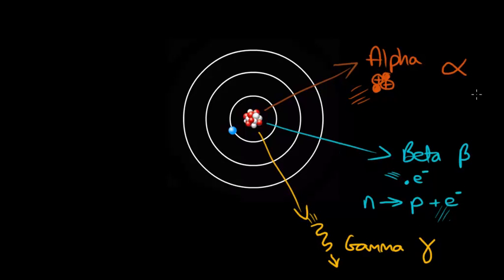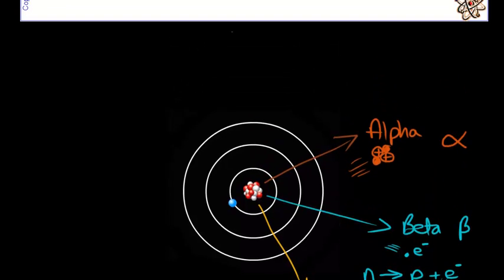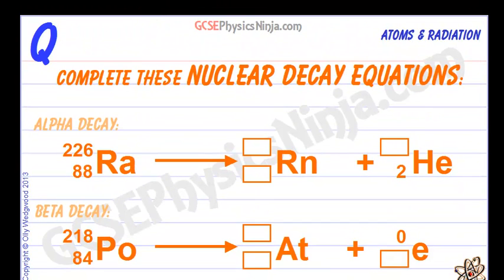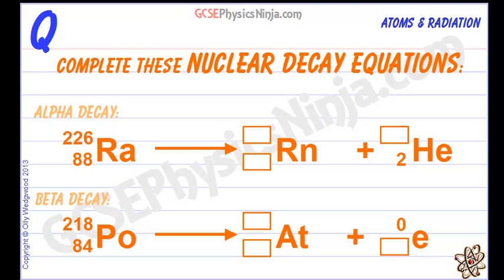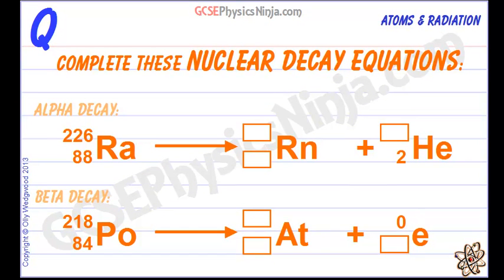We can describe these types of radioactive decay using radioactive decay equations. Let's take a look at alpha and beta for these decay equations. So first off we have alpha decay.